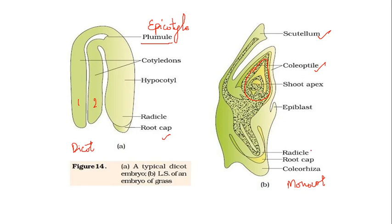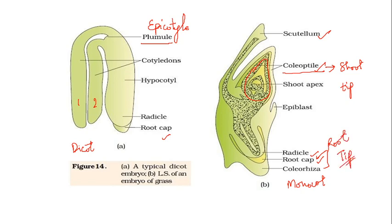At the bottom of the monocot embryo, the coleorrhiza encloses the radicle and root. So the coleoptile is for shoot tip formation and the coleorrhiza is for root tip formation. Draw this diagram on your own and label it after looking at it, then try to draw and label it without looking — that way you will learn it.